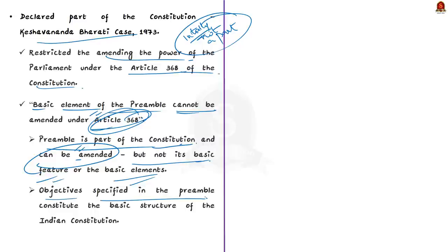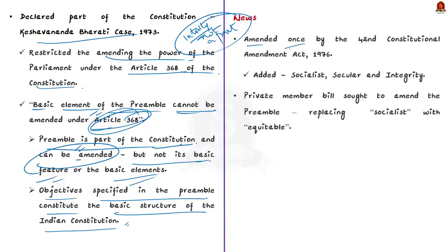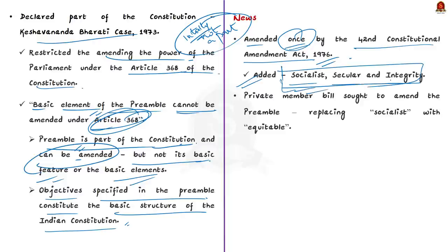The Supreme Court held that the objectives specified in the preamble constitute the basic structure of the Indian constitution, which cannot be amended. The preamble has been amended only once — in 1976 — by the 42nd Constitutional Amendment Act, which added three new words: socialist, secular, and integrity. This amendment was held to be valid, meaning it did not amend the basic element of the preamble. Now, on similar lines, a private member's bill was brought by an MP to amend the preamble, particularly to replace the word 'socialist' with 'equitable'.